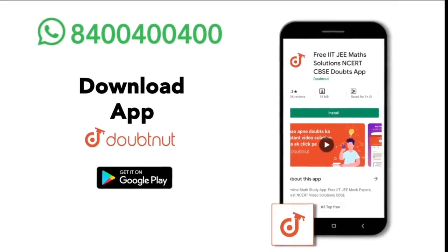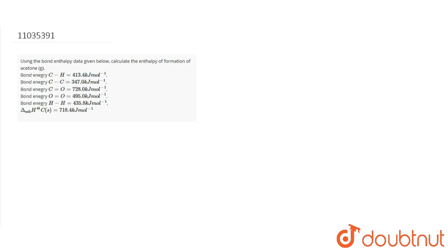In this question, we need to calculate the enthalpy of formation of acetone gas using bond enthalpy data: CH, CC, C double bond O, O double bond O, and HH. We also have the heat of sublimation of C solid, that is C graphite to C gas, and the enthalpy of that reaction.